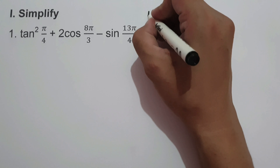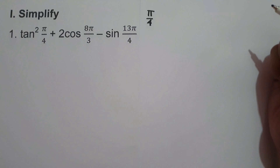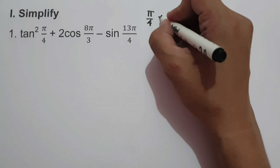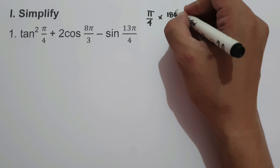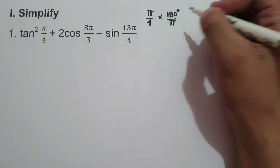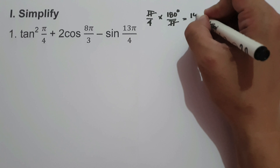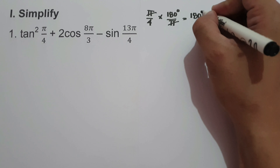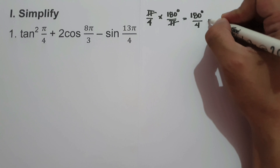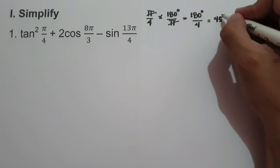Starting with pi over 4, to convert to degrees, let us multiply it by 180 degrees over pi. Let us cancel pi, and we have 180 degrees over 4. 180 divided by 4 gives us 45 degrees.